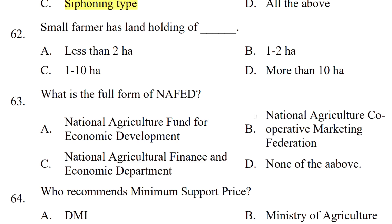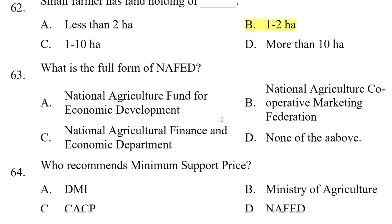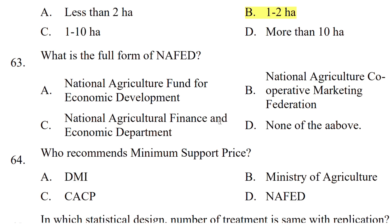A small farmer has a land holding of — the options are less than 2 hectare, 1 to 2 hectare, 1 to 10 hectare, or more than 10 hectare. The correct answer is 1 to 2 hectare. What is the full form of NAFED? The options are National Agriculture Fund for Economic Development, National Agriculture Cooperative Marketing Federation, or National Agricultural Finance and Economic Department. The correct answer is National Agriculture Cooperative Marketing Federation.